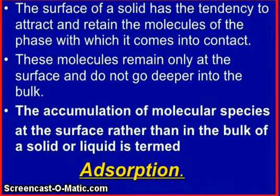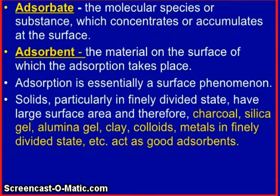The surface of a solid has the tendency to attract and retain the molecules of the phase with which it comes into contact. These molecules remain only at the surface and do not go deeper into the bulk. The accumulation of molecular species at the surface rather than in the bulk of a solid or liquid is called adsorption. The adsorbate is the molecular species or substance which concentrates or accumulates at the surface.